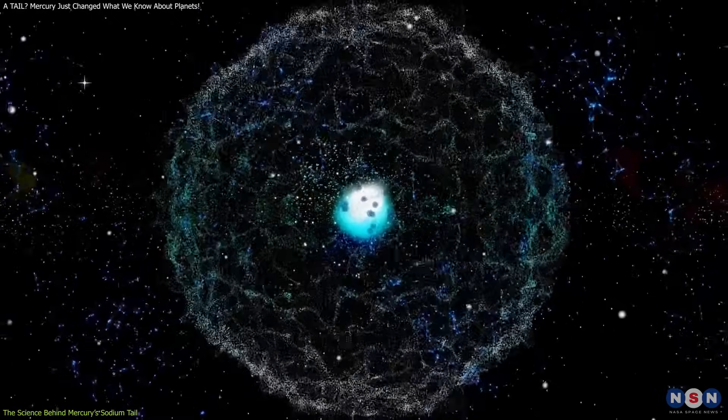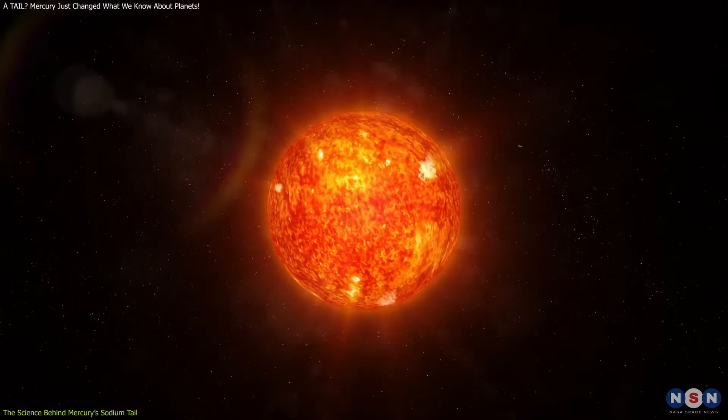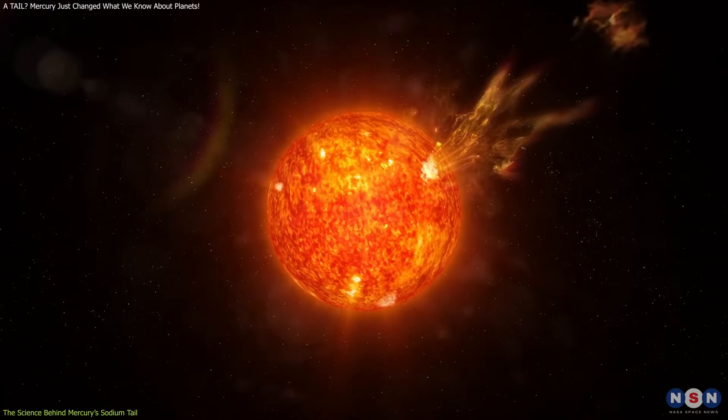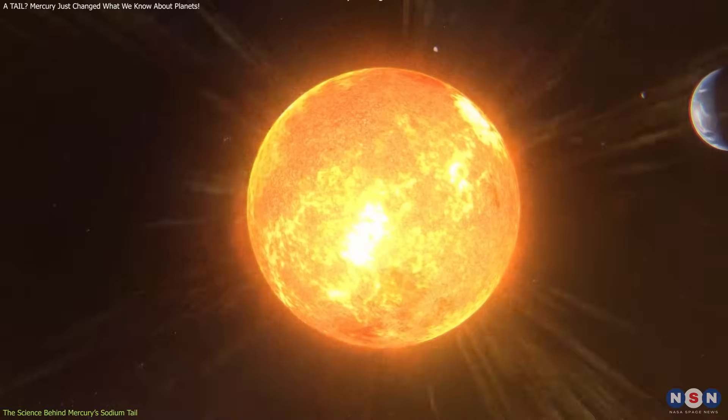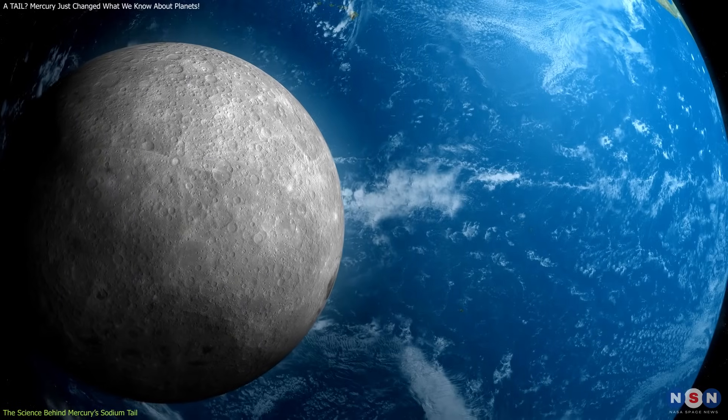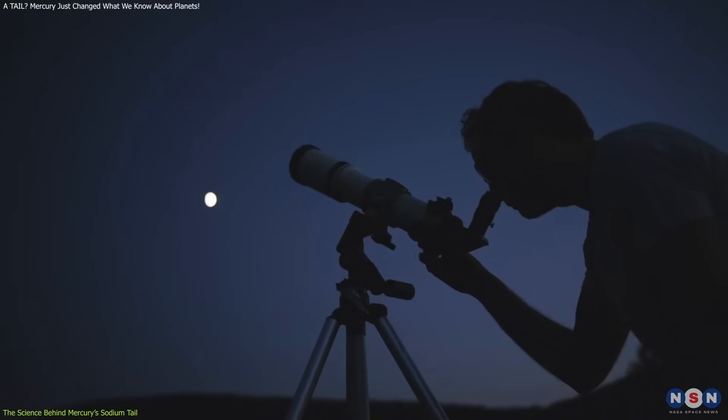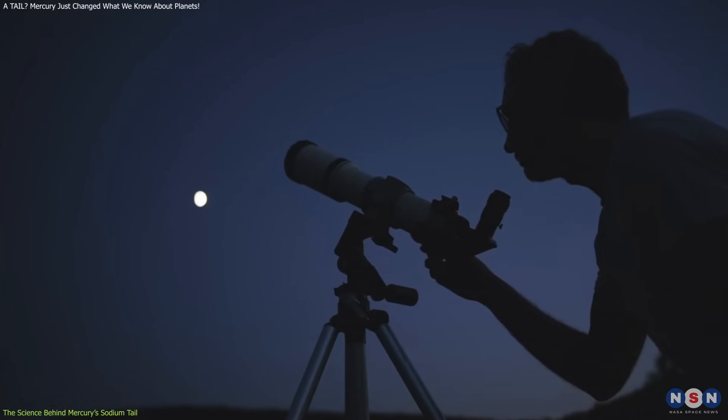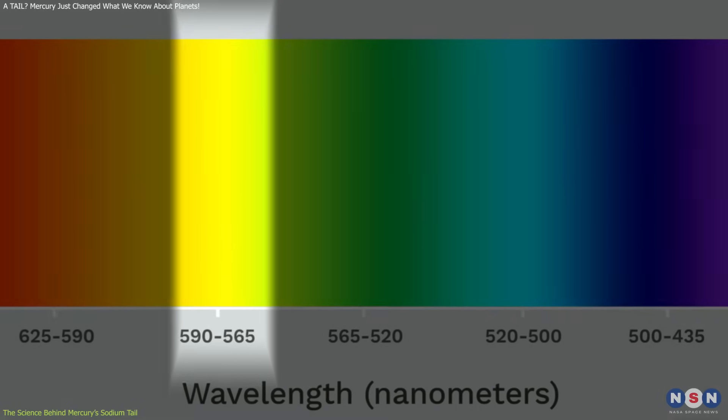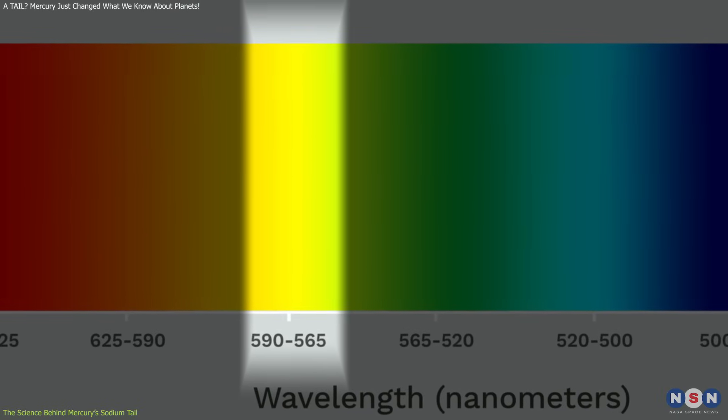Once these atoms are ejected, they don't just linger. Radiation pressure from the Sun, the force exerted by sunlight, acts like a steady wind, pushing these sodium atoms away from Mercury. The result is a tail that can stretch as far as 24 million kilometers, about 60 times the distance between Earth and the Moon. This tail is invisible to the naked eye, but can be detected using special filters tuned to the 589 nanometer wavelength, which is the light sodium atoms emit.